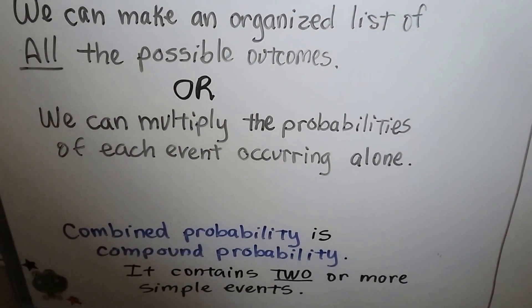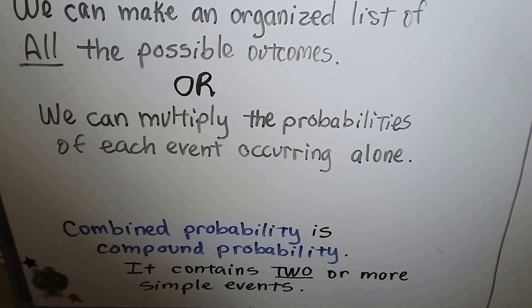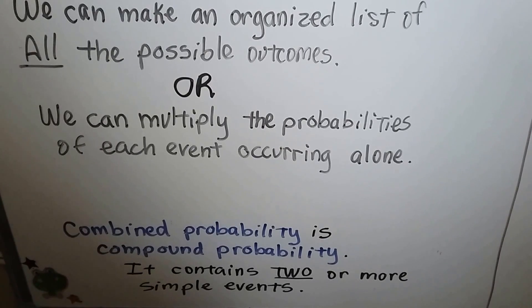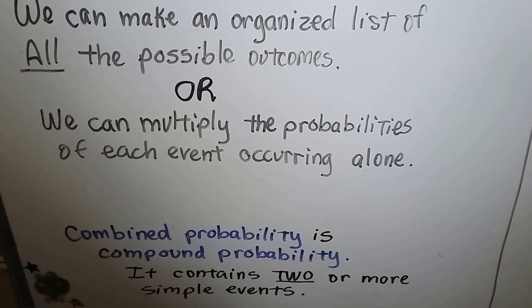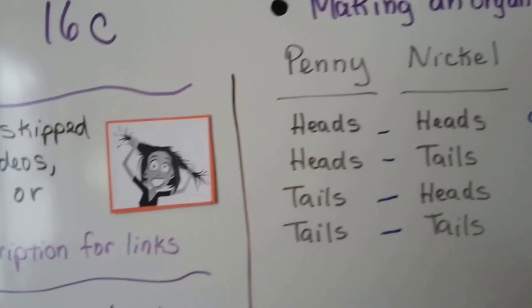Now combined probability is compound probability. It's the same thing. They're calling it combined probability in this text. It just contains two or more simple events. They can be independent or dependent, and I'll talk about that.